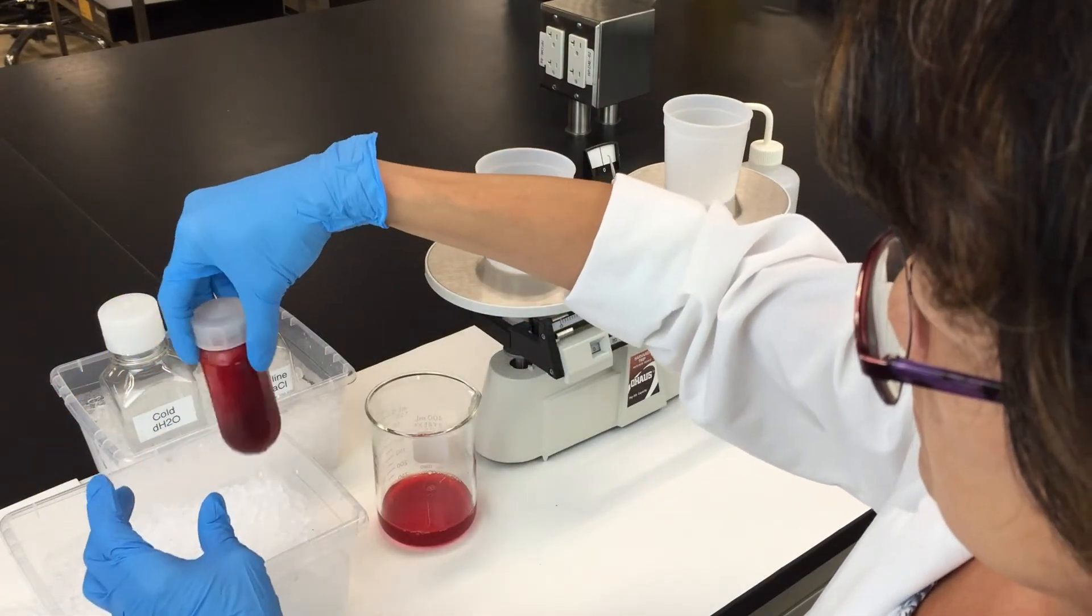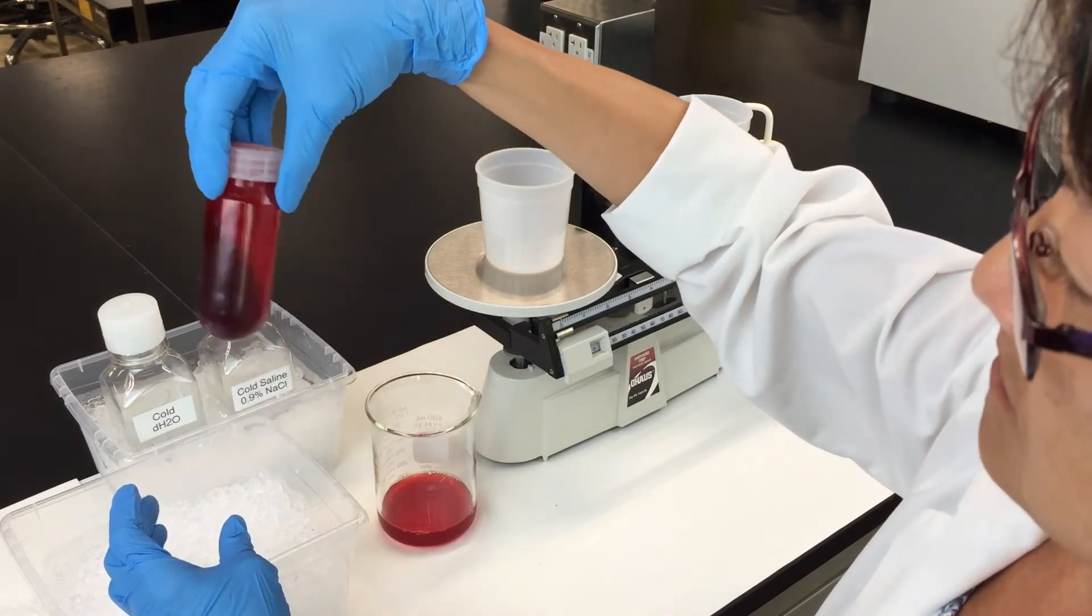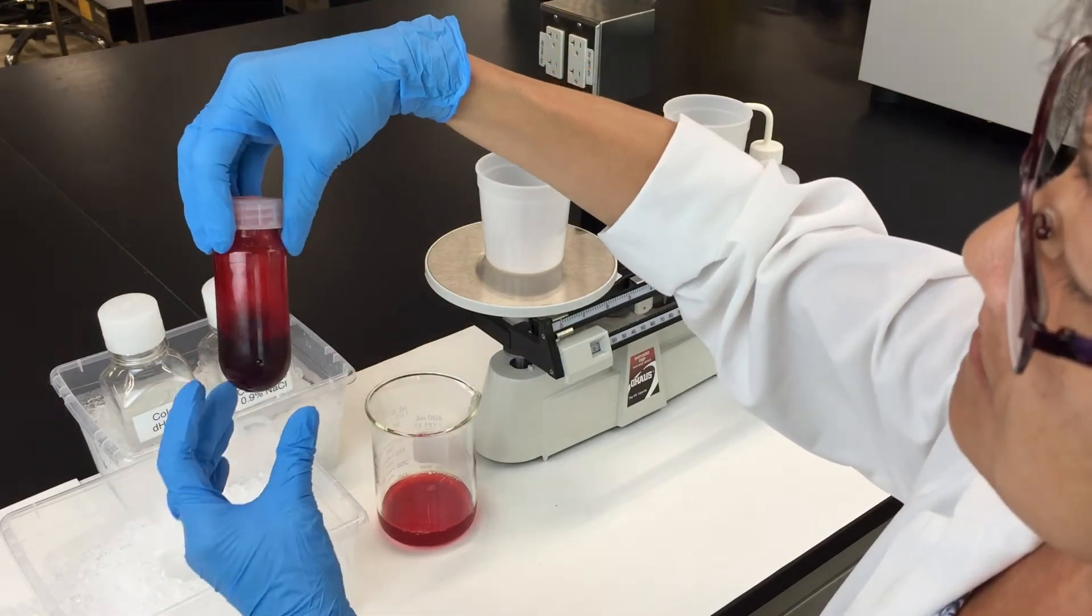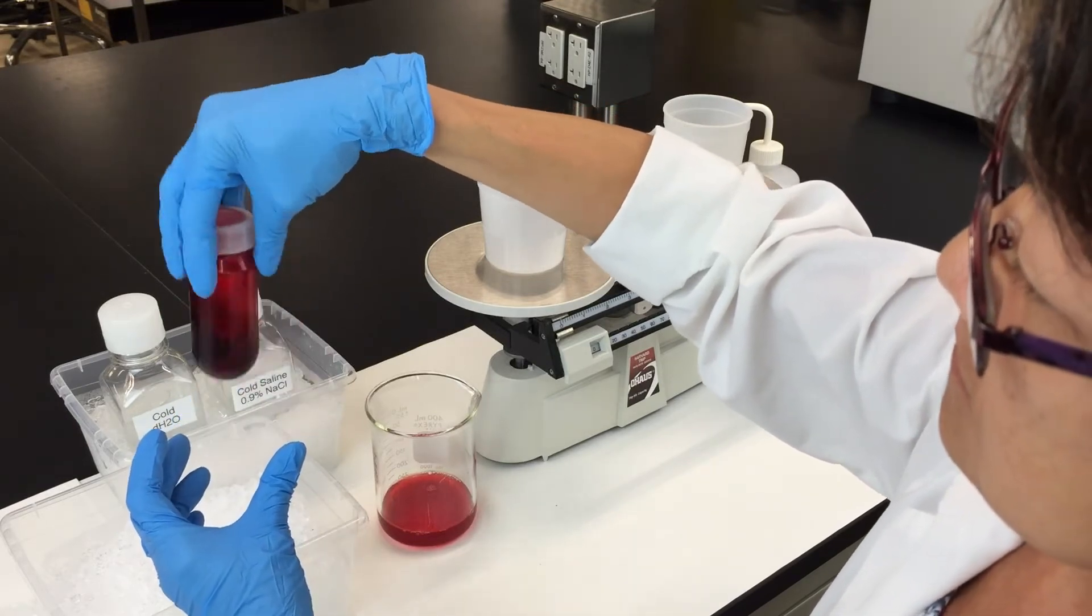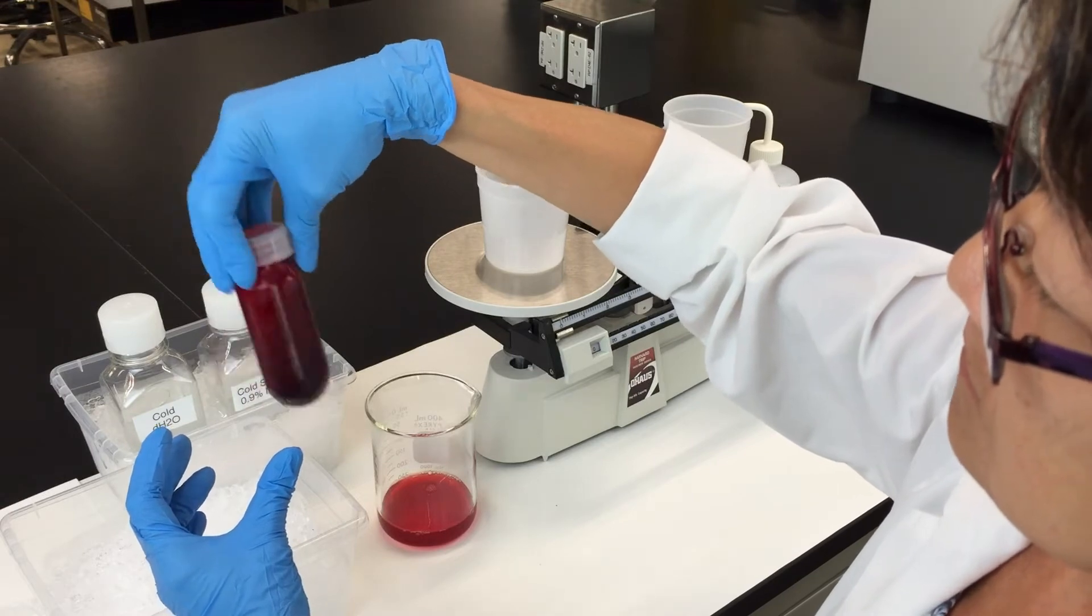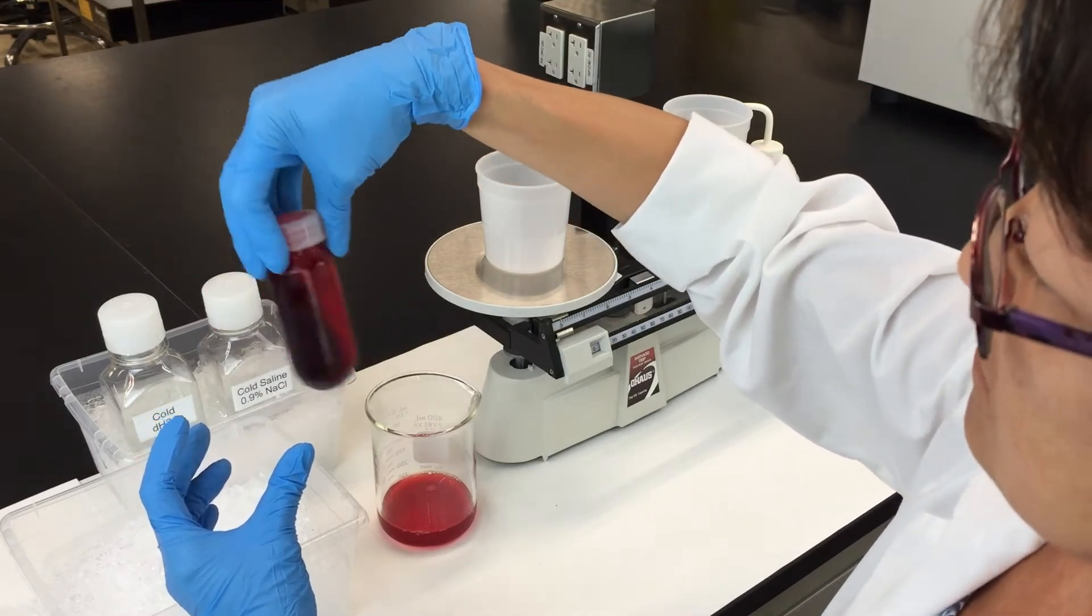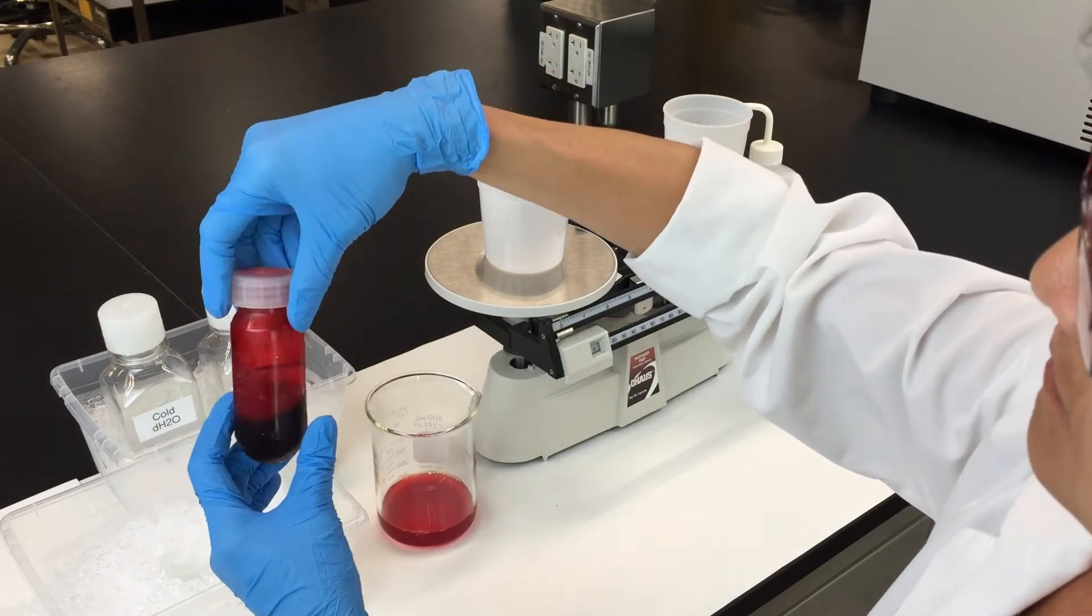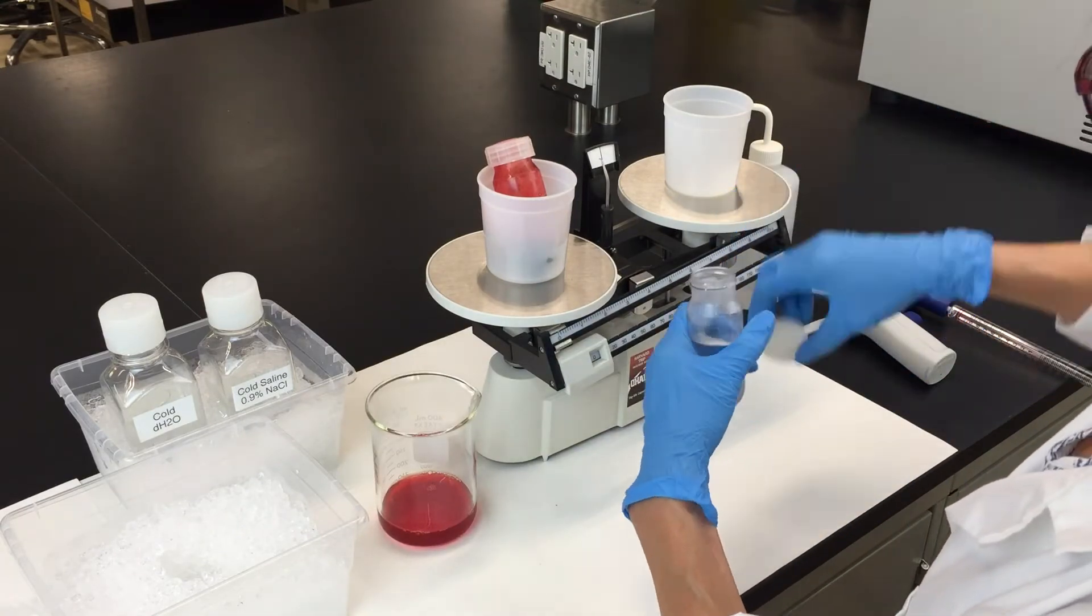Swirl the tube to re-suspend the pellet. You should see the solution turn from a bright red color to a dark red color as the red blood cells burst. Balance the tube and spin it down again.